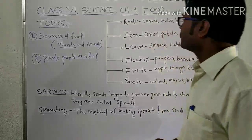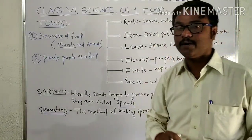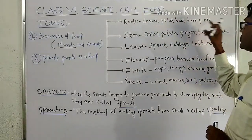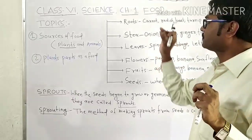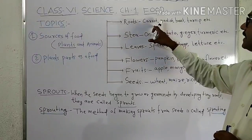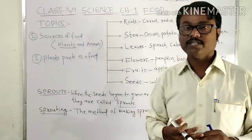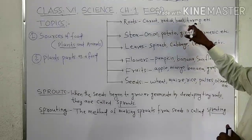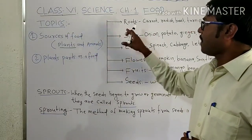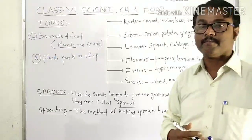The first part is root — it is a very important part of the plant. Carrot, radish, beetroot, and turnip are examples of roots which are taken as food. You are very familiar with carrot and radish; we use them in salads as well. These are roughage-type foods, and beetroot and turnip are also very important foods coming from the plant's root part.